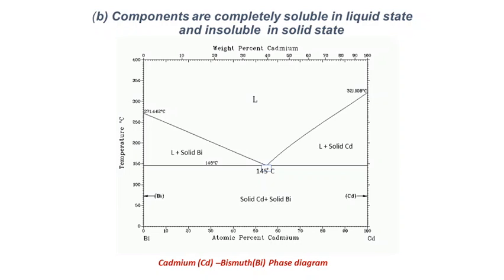In this class we will discuss the second classification of the eutectic phase diagram, in which the components are completely soluble in the liquid state and completely insoluble in the solid state. In the previous case there was limited solubility in the solid state — less than 10 percent or so — but in this case there is no solubility. Whatever components are mixed in the liquid state can return to their initial components. For example, if we have two components, component A and component B,